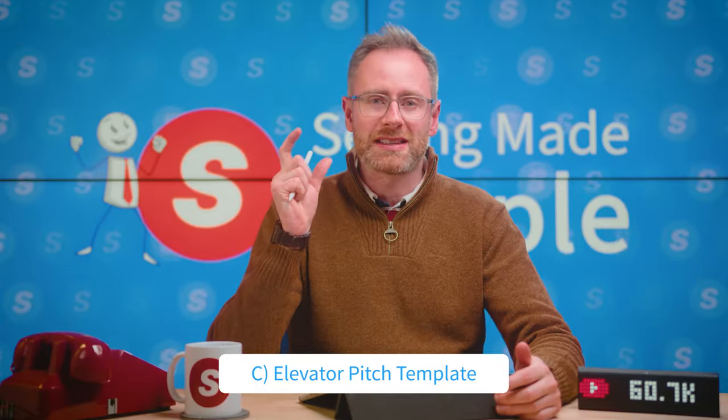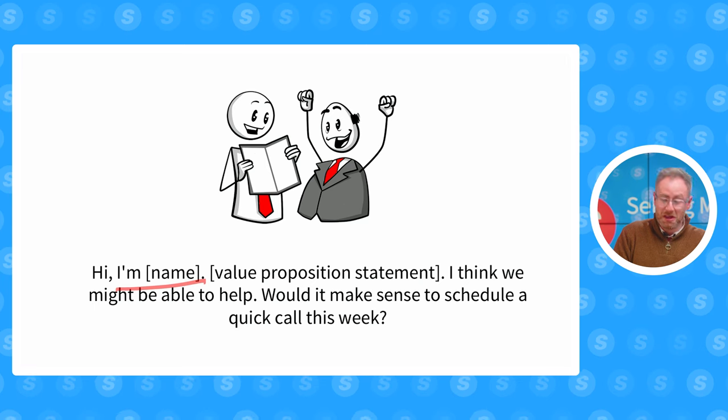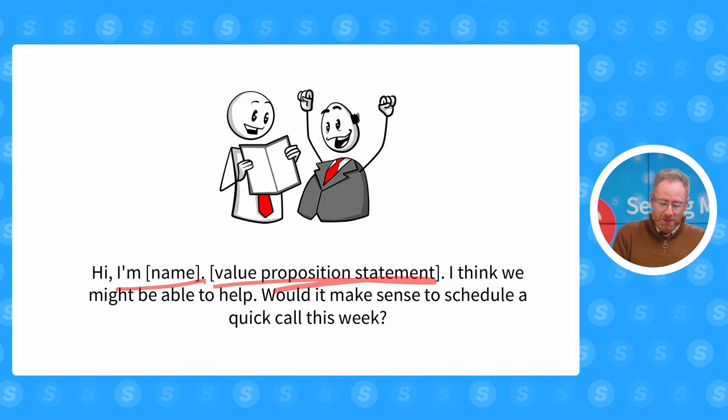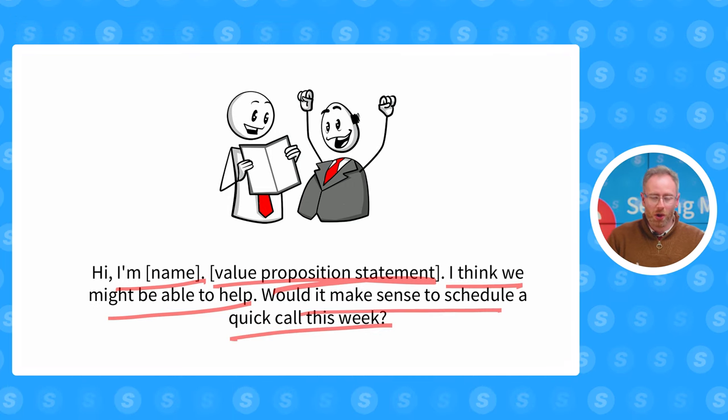Now we take our value proposition statement and slot it into our elevator pitch template. The simplest and most effective template we use at salesman.com is: Hi, and then your name, then your value proposition statement. Then we follow up with: I think we might be able to help. Would it make sense to schedule a quick call this week? We're not saying I can definitely help you or I can do all these things. We're saying: hey, I might be able to help — would it make sense to book a quick call this week?